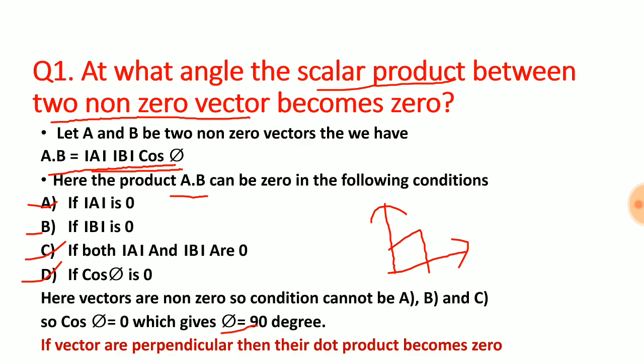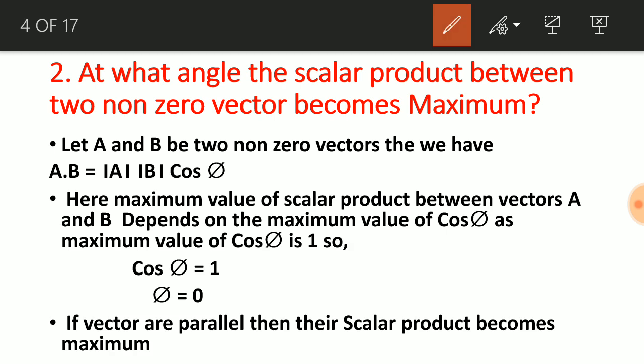Now let us see another question: at what angle does the scalar product between two non-zero vectors become maximum? Our scalar product is A·B = AB cosφ. Since A and B are fixed non-zero numbers, we maximize cosφ. The maximum value of cosφ is 1, which occurs when the angle between the two vectors is zero — meaning the two vectors are parallel to each other.